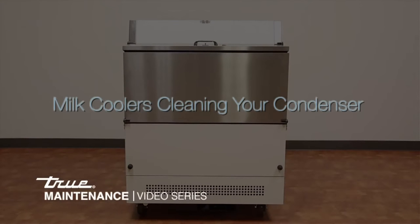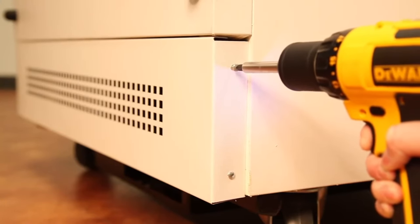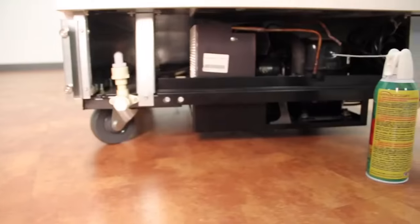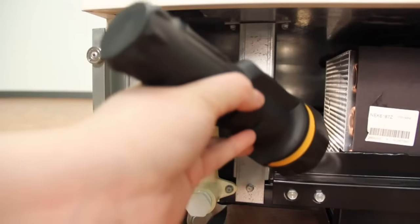This instructional video shows the proper way to clean the condenser of a TMC True Milk Cooler. Tools required for this task include Phillips screwdriver, stiff bristle brush, air tank or CO2, vacuum cleaner, and a flashlight.